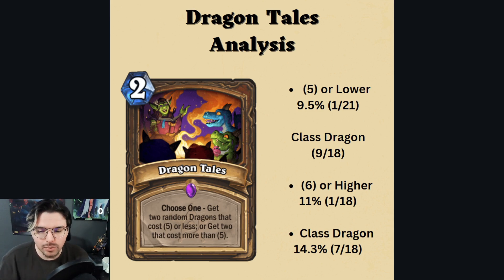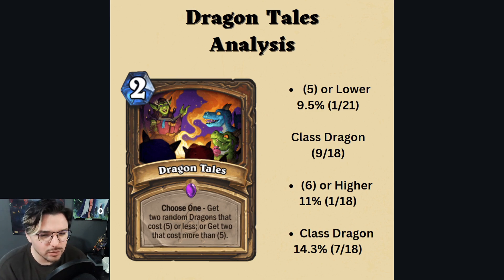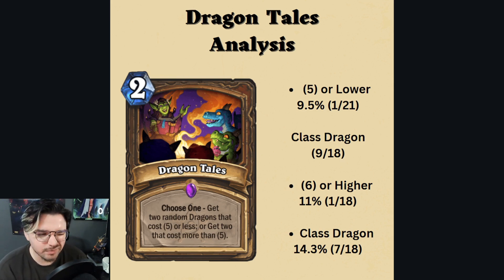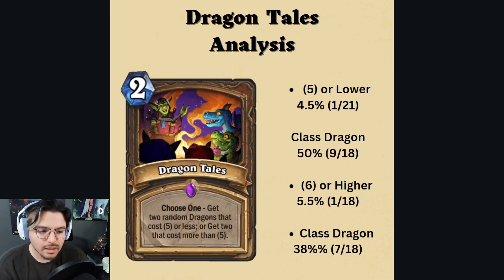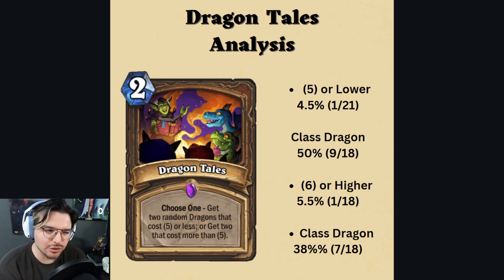I pulled up some numbers here. They are rough numbers, but numbers nonetheless. Percentages are around one out of — there are about 21 dragons for the five or lower mana cost curve. So for getting any type of dragon, it's a 9.5% or about a 4% chance of getting that specific dragon. These numbers are a bit estimated.